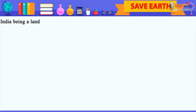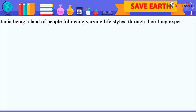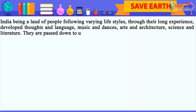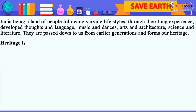India is a land of people following varying lifestyles. Through their long experience, they developed thoughts and language, music and dances, arts and architecture, science and literature. These are passed down to us from earlier generations and form our heritage. Heritage is of two types: natural heritage and cultural heritage.